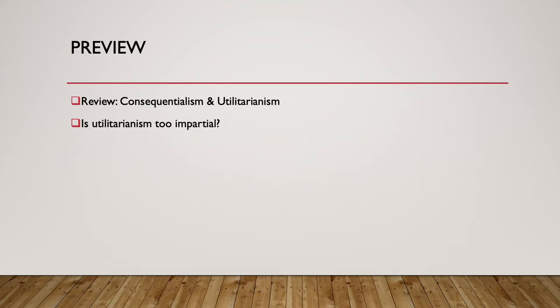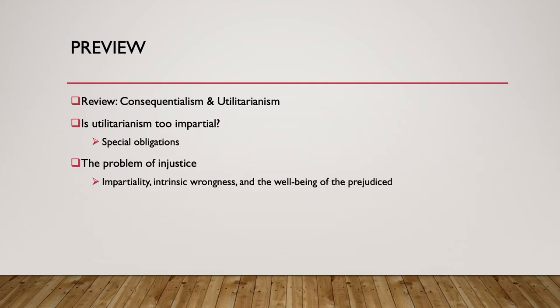We'll talk about whether utilitarianism is too impartial, and we'll talk about some of the special obligations people think we have. And then we'll talk about the problem of injustice. We'll talk about impartiality, intrinsic wrongness, and the well-being of the prejudiced. We'll talk about injustice as a means to an end, and then utilitarian replies to this problem.